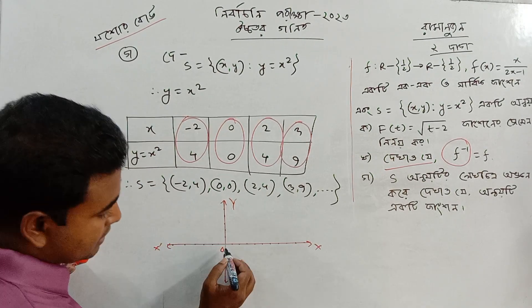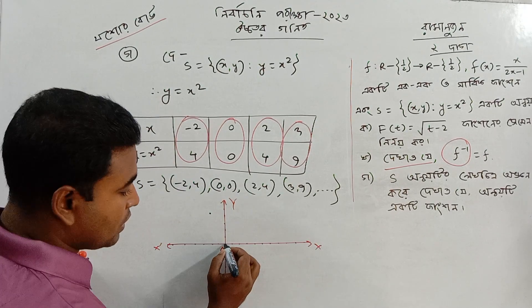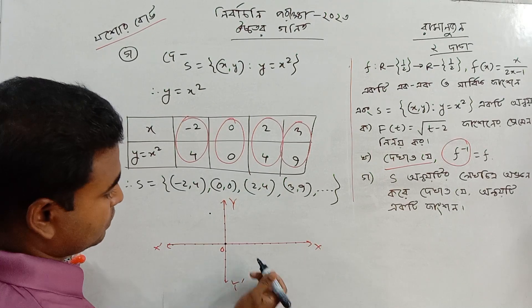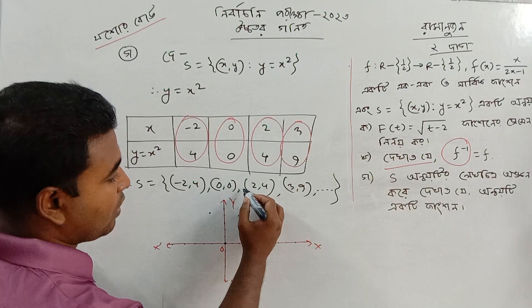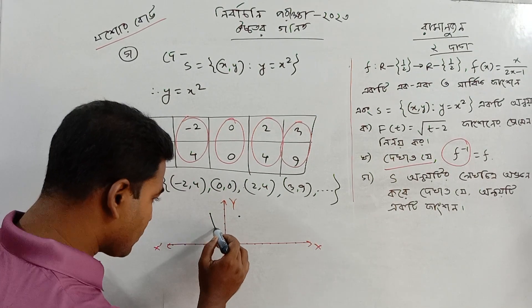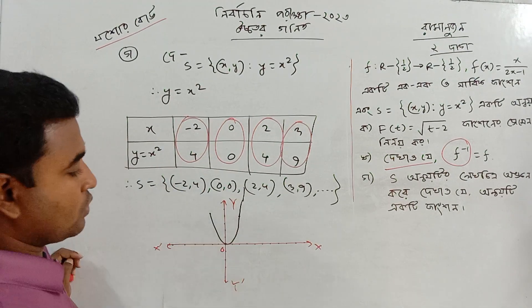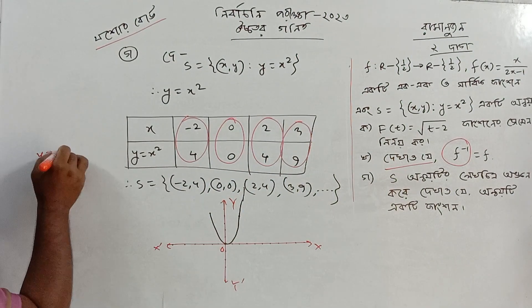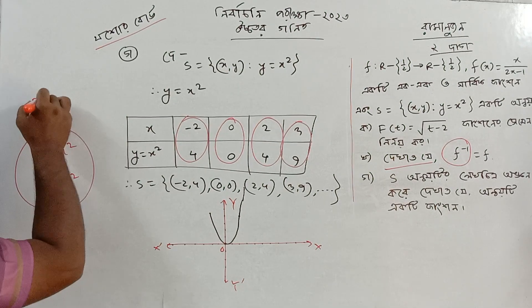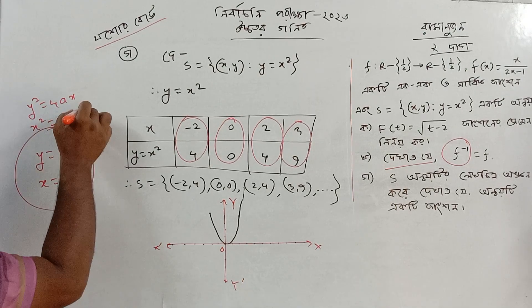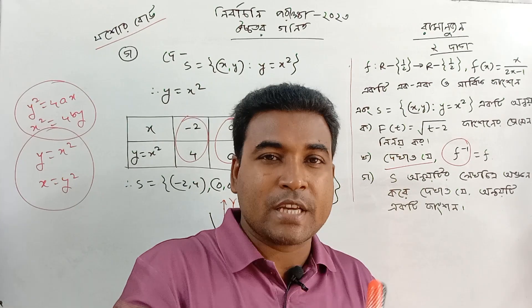This means: minus 2, 4; then 0, 0; then 2, 4; then 3, 9. So the coordinate pairs are (-2, 4), (0, 0), (2, 4), (3, 9).